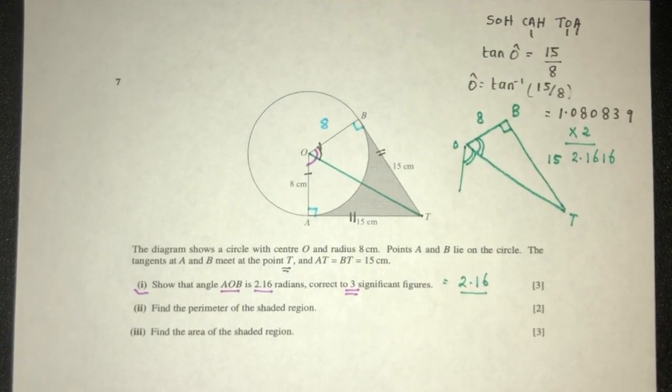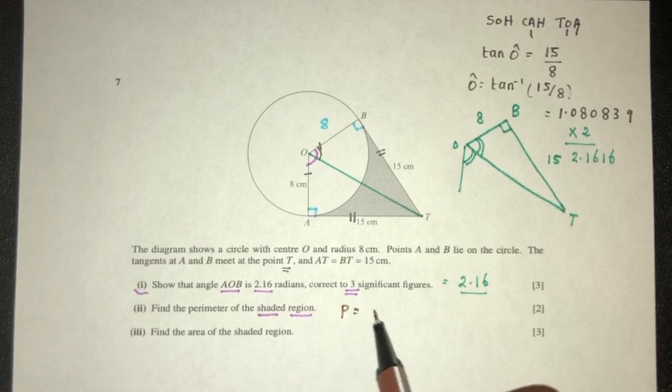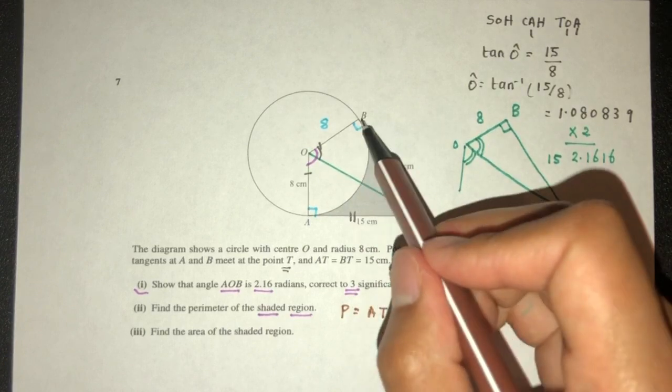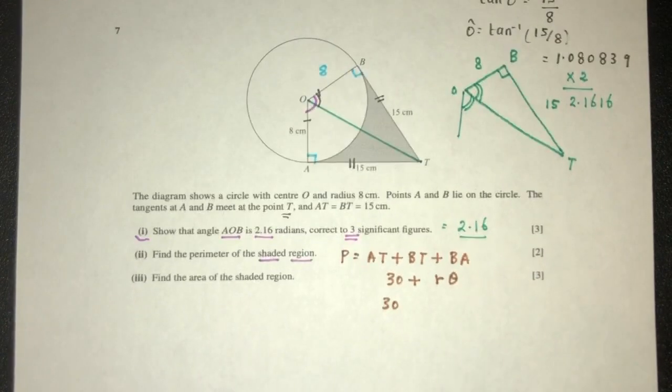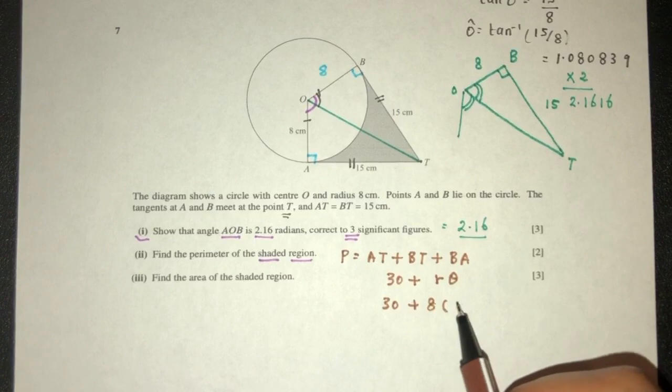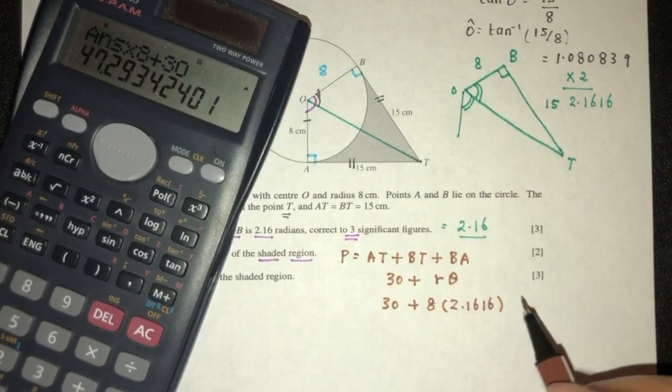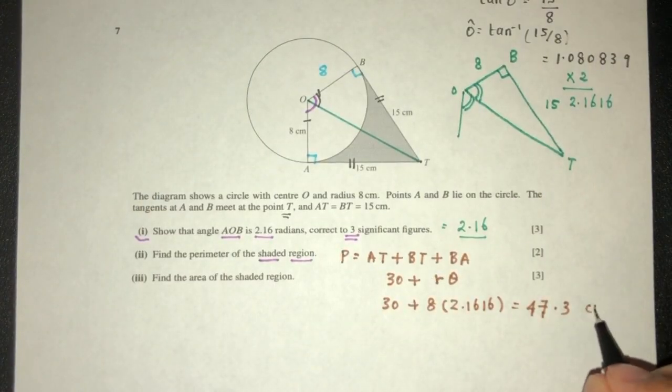Now for part 2, we have to find the perimeter of the shaded region, which is this one right here. We have to find that, not show that. So again, how do we find the perimeter? It's the distance around the object. So we can see it should be AT plus BT plus BA. Now AT plus BT is equal to 30. Now BA is the arc length, right? So arc length is R times theta. So 30 plus R is 8, theta is 2.1616. This times 8 plus 30, that should be 47.3, correct to 3 significant figures. Of course you have to write centimeters over here.